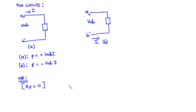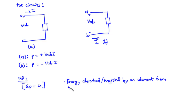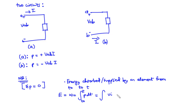The energy absorbed or supplied by an element from time T0 to T is given by W, or E equals the integral of P dT from T0 to T. You can also express this as the integral of Vi dT from T0 to T. That is the energy absorbed or supplied by an element from T0 to T.